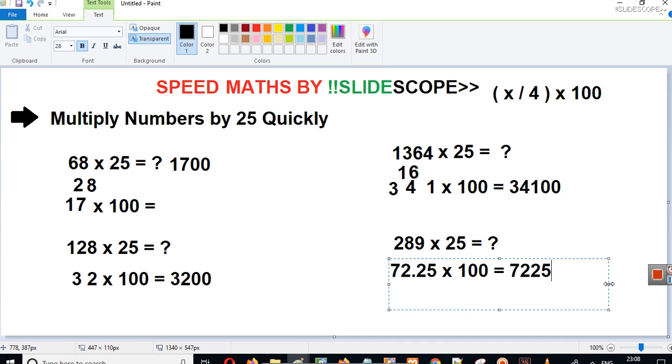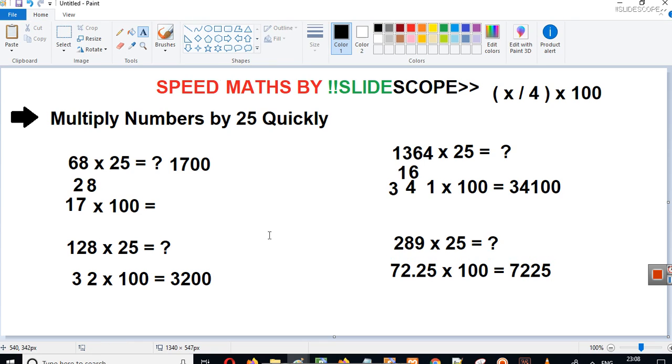So this will be the multiplication. So that's how you can multiply any particular number by 25. If you have to multiply it by 25, then instead of going for the multiplication, just divide that number by 4 in your mind, and then just multiply it by 100.